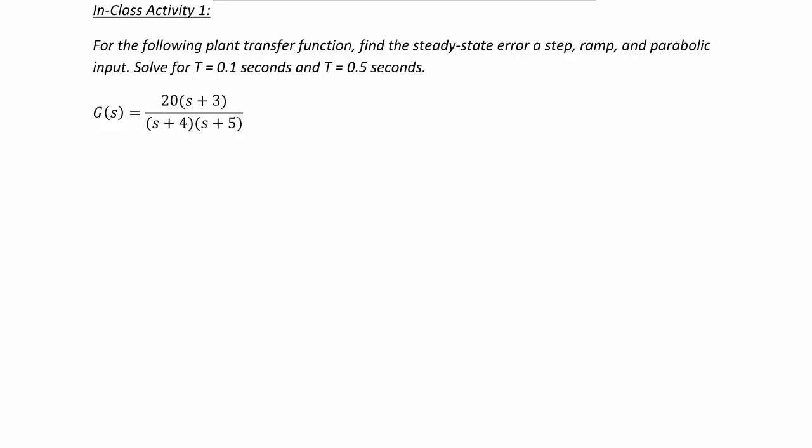In-class activity 1: for the following plant transfer function, find the steady state error for a step, ramp, and parabolic input. Solve twice — once for sampling time T equal to 0.1 seconds and once for T equal to 0.5 seconds. Since we have a continuous time transfer function G(s) equal to 20(s plus 3) over (s plus 4)(s plus 5), the first thing we must do is use a zero-order hold to convert it to discrete time.